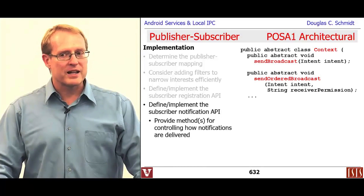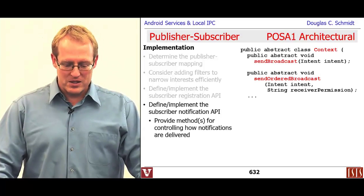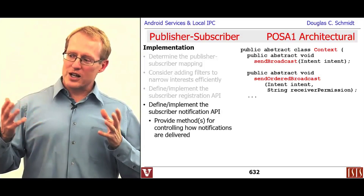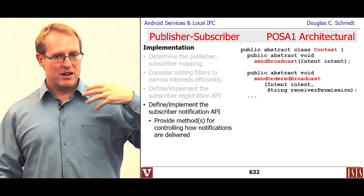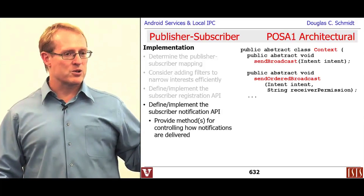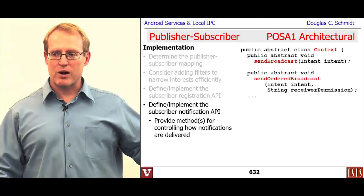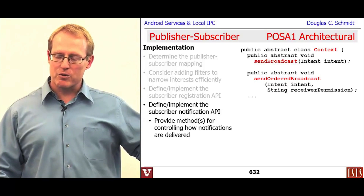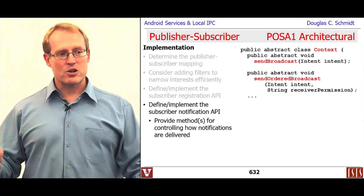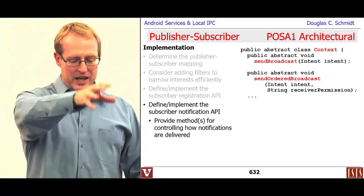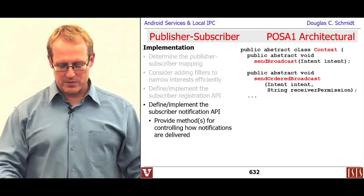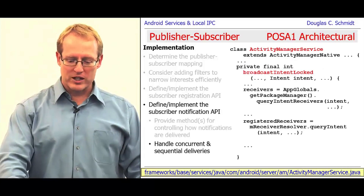Then you also have to figure out how to define and implement the notification API — the thing that the publisher uses to notify the subscribers. Android has a couple different variants of this. One is called Send Broadcast, which sends it out to everybody kind of in parallel. The other is called Send Ordered Broadcast, which serializes the way in which the dispatching takes place. There's a whole pile of variants of Send Ordered Broadcast that do various kinds of things, so I recommend you take a look at the documentation for more details.